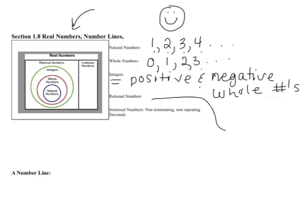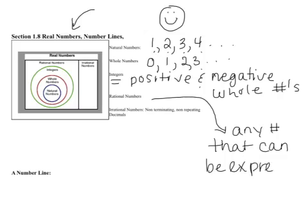Now then we've got rational numbers, and I know some of you know what rational numbers are, but rational numbers are any number that can be expressed as a fraction. I apologize for the neatness, I'll get better as we move on.